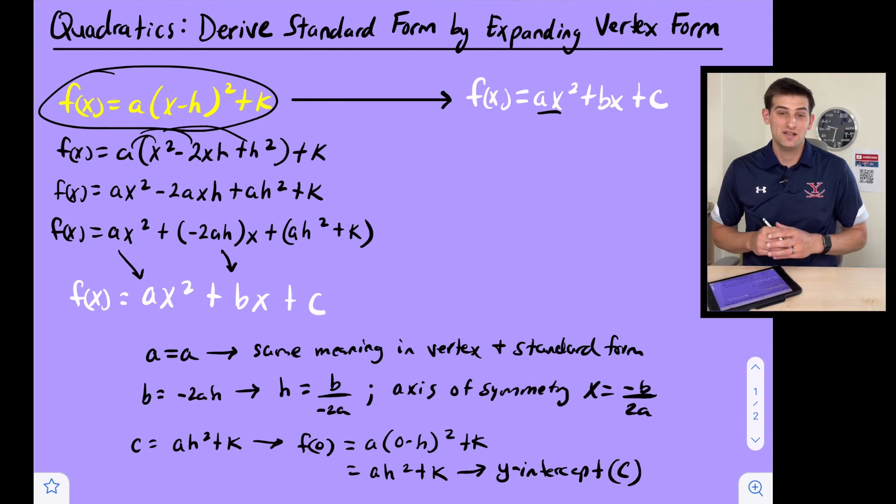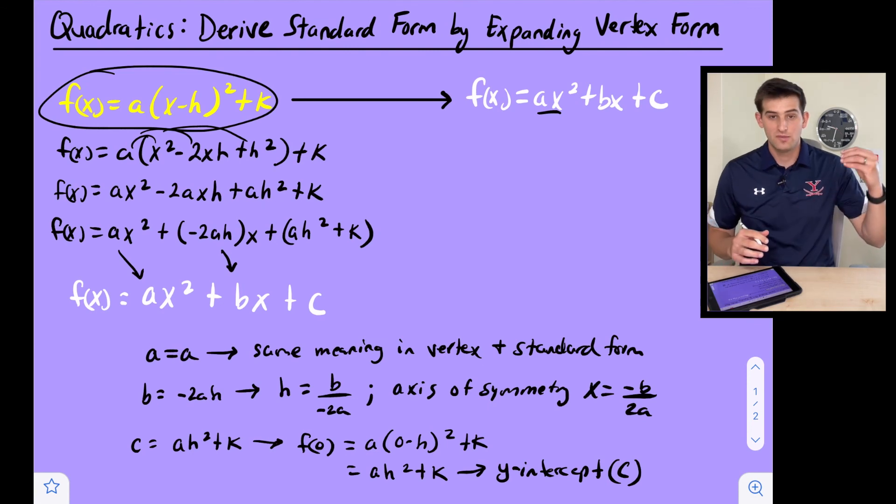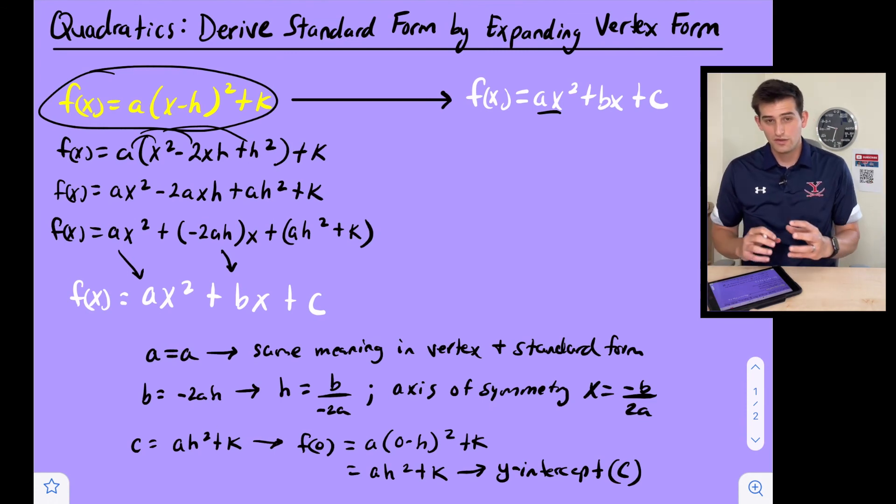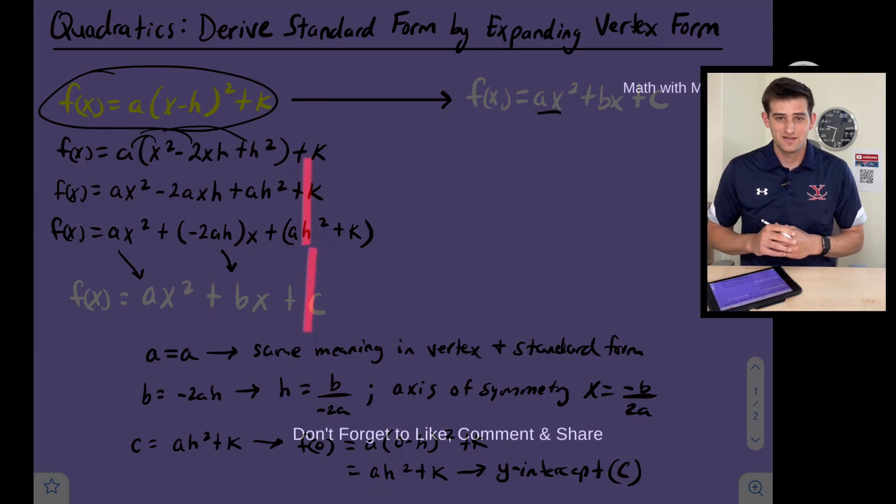So that's how we can go from a vertex form quadratic to a standard form quadratic, just deriving standard form from vertex form, and also how we can interpret what the different letters or the variables mean in ax² + bx + c.